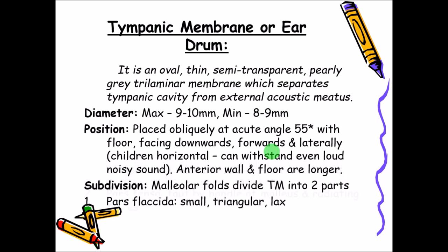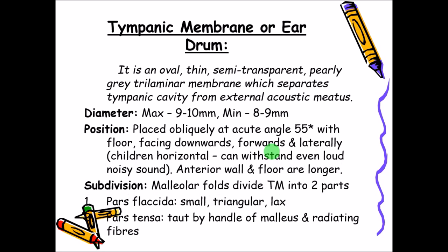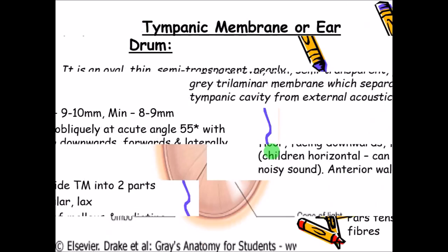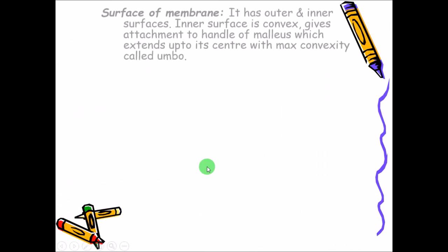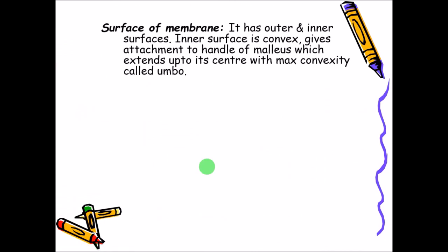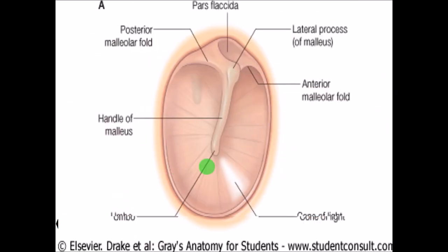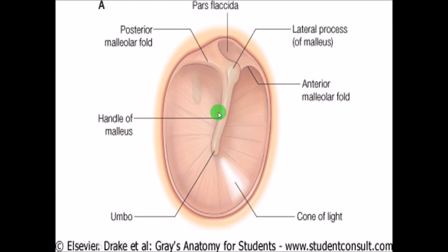The mallular fold divides the tympanic membrane into two parts: the pars flaccida (upper part) and the pars tensa. The inner surface is convex and gives attachment to the handle of the malleus, one of the ossicles of the middle ear. The handle of the malleus attaches to the tympanic membrane, reaching up to the center where the most bent part is called the umbo.